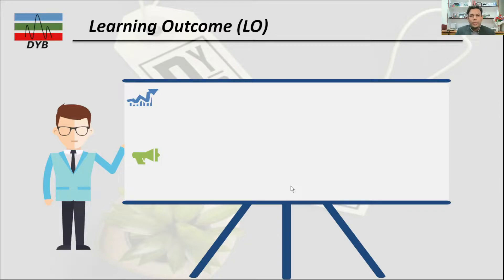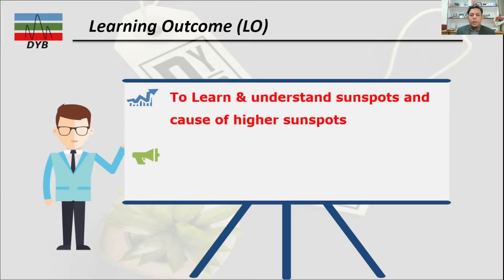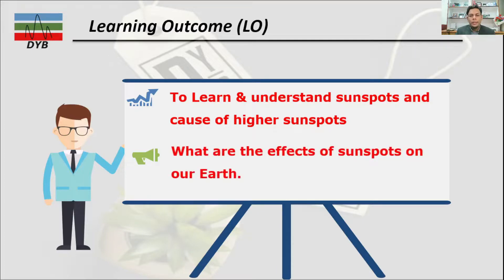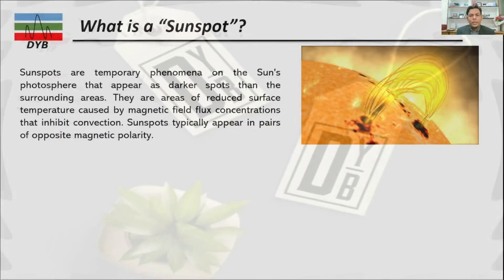Before going to the lecture, we have some learning outcomes. The first learning outcome is to learn and understand sunspots and the cause of higher sunspot activity on the sun. The second learning outcome is to know what are the effects of sunspots on the earth.